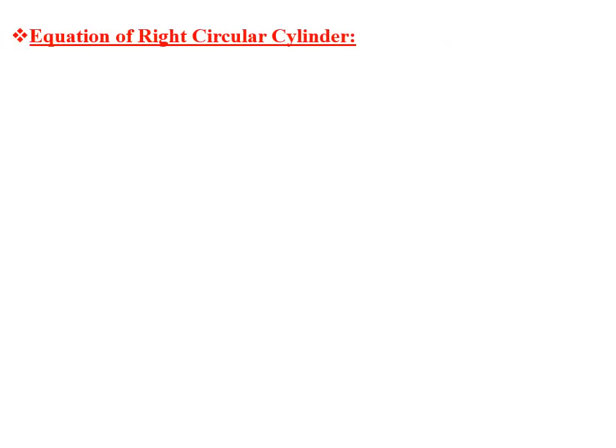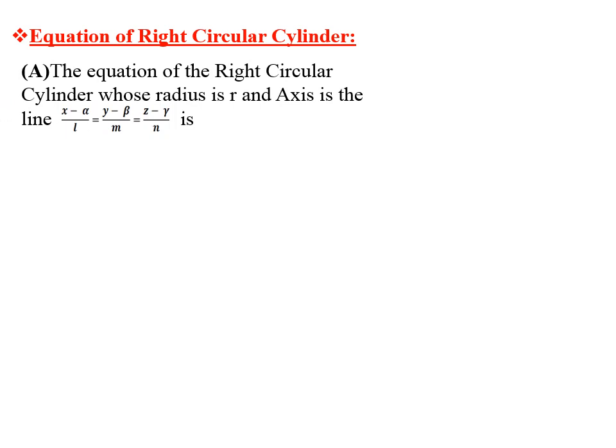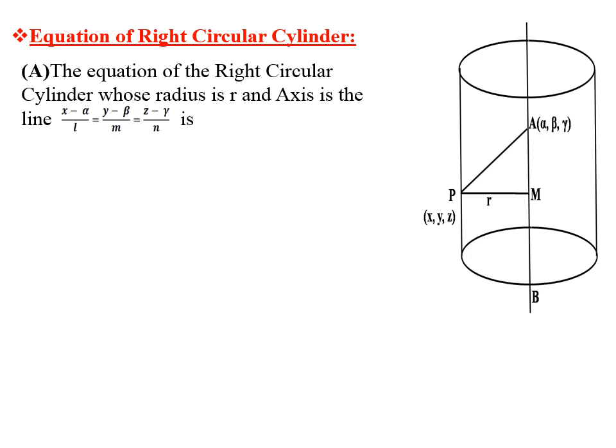Now let us see the equation of the right circular cylinder. Case 1: the equation of RCC whose radius is r and whose axis is given as (x − α)/l = (y − β)/m = (z − γ)/n. From the figure, line AB is the axis of the right circular cylinder, where A is the fixed point with coordinates α, β, γ.